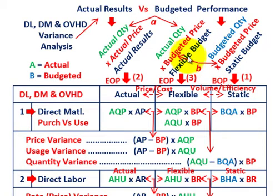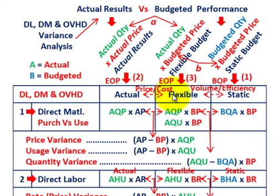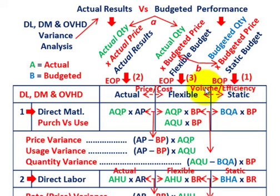Now you can do your variance analysis. When talking about materials, labor, and overhead, the difference between your actual amounts and your flexible amounts are going to be price or cost variances. Then the difference between the flexible and the static amounts are going to be volume or efficiency variances.